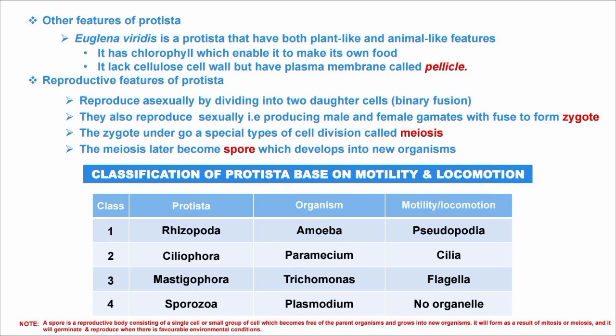At this point I want to talk about spores. A spore is a reproductive body consisting of a single cell or small group of cells which can develop into a different organism and grow into a new organism. It forms as a result of mitosis or meiosis, and it will germinate and reproduce only when there is a favorable condition.